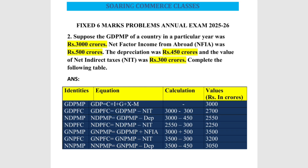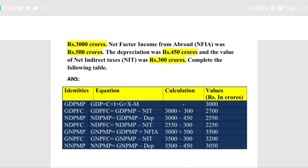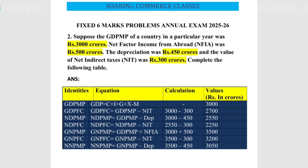The first identity given is GDP MP. The equation for GDP MP is: GDP MP = C + I + G + X − M. No need to calculate this one because it is already given in the question — GDP MP is 3000 crores. You just write 3000 crores in the values column.